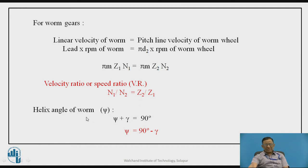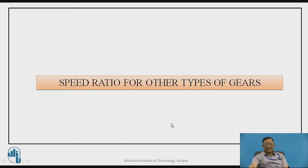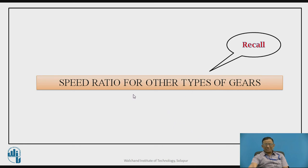Worm gears are used for transmitting power between two non-intersecting perpendicular shafts, so the angle between the shafts is 90 degrees. Therefore, psi plus gamma — helix angle plus lead angle — must equal 90 degrees, meaning the helix angle equals 90 minus the lead angle. Students, pause the video and find out how the speed ratio for other types of gears you have studied so far compares with this.